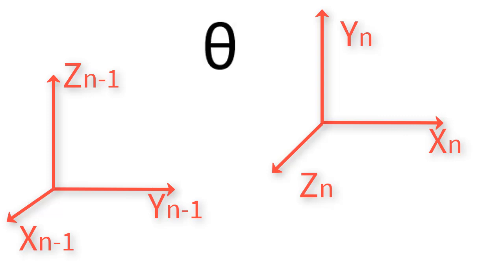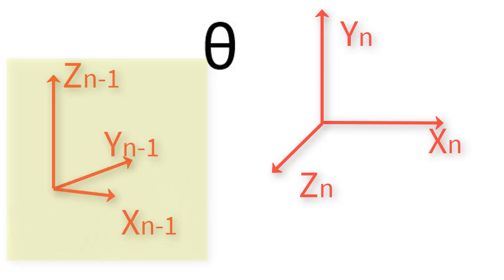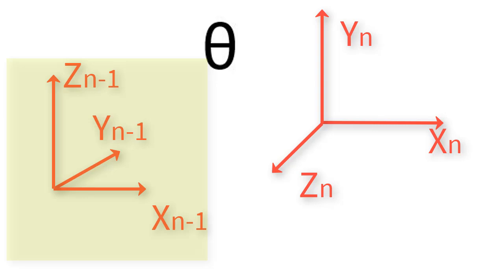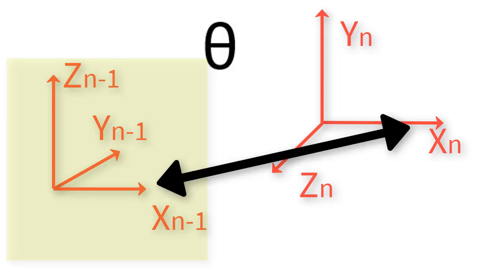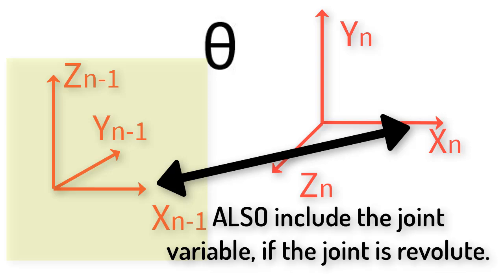Theta is the amount that we have to rotate frame n minus 1 around the axis z n minus 1 in order to get axis x n minus 1 to match axis x n. We also have to include in this parameter any rotation of the joint if the joint is a revolute joint, because this rotation is also a rotation around the axis z n minus 1.